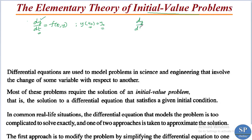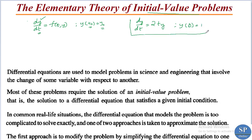For example, dy/dt = 2ty along with y(0) = 1 is an example of an initial value problem.